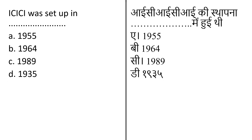When was ICICI set up? The options are 1955, 1964, 1989, and 1935. The correct answer is option A: 1955.